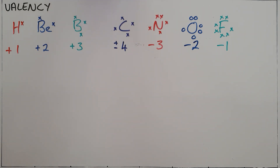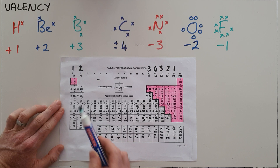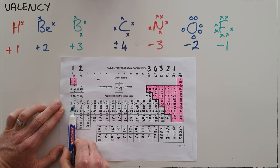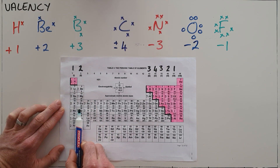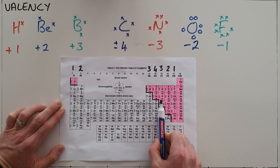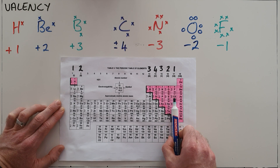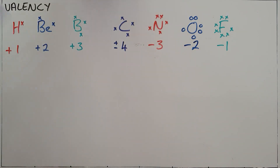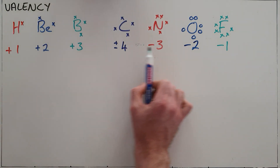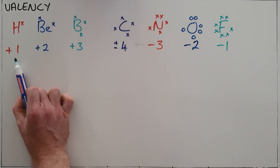This is the way to determine what an element's valency is. You can also simply write these numbers down on your periodic table: elements in group one have a valency of one, group two have a valency of two, group thirteen have a valency of three, group fourteen have a valency of four, group fifteen have a valency of three, group sixteen have a valency of two, and group seventeen have a valency of one. The positive and negative signs in front of these are not important because valency is simply how many bonds an element can form.